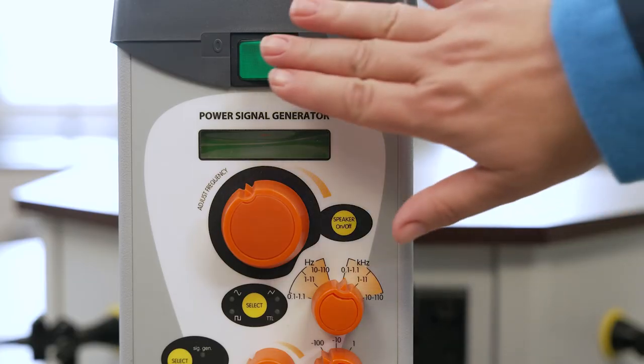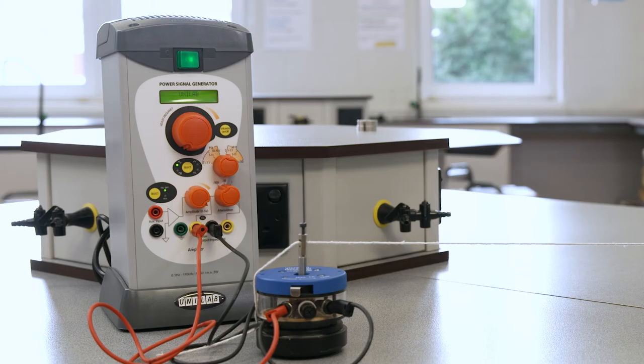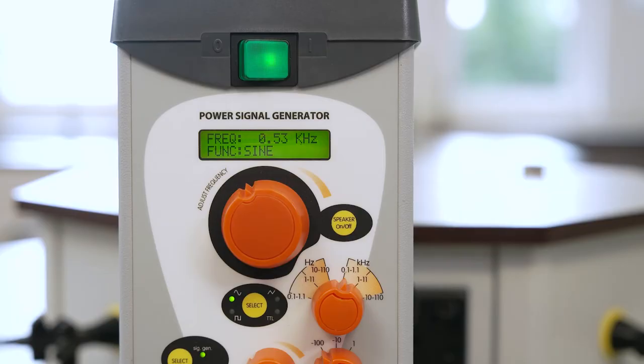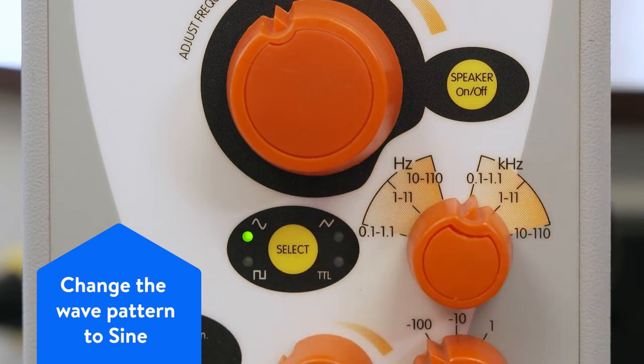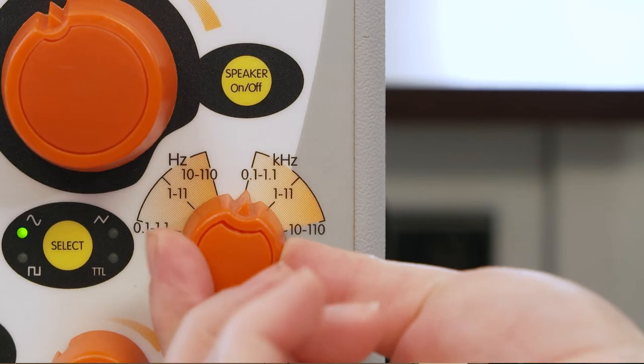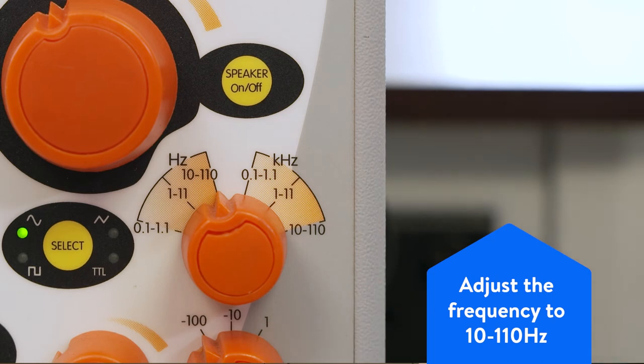Turn on the power signal generator, allowing a few seconds for it to power up. Set the power signal generator to sine wave by pressing the select button. Adjust the frequency selector to 10 to 110 Hz.